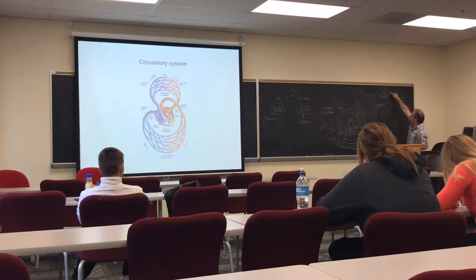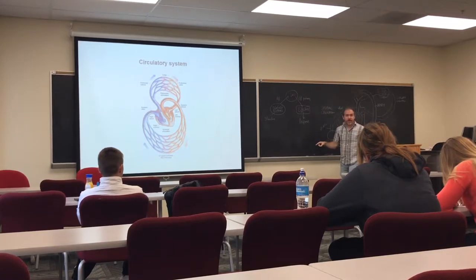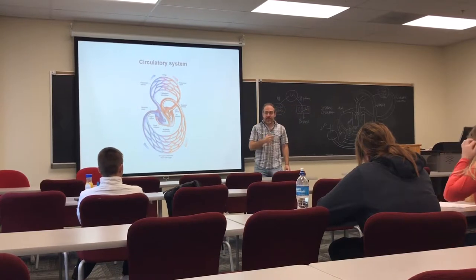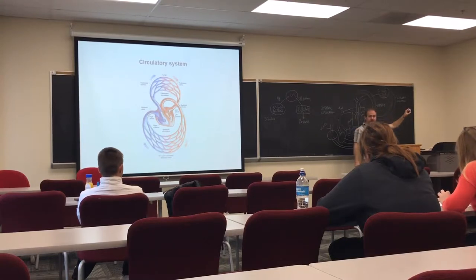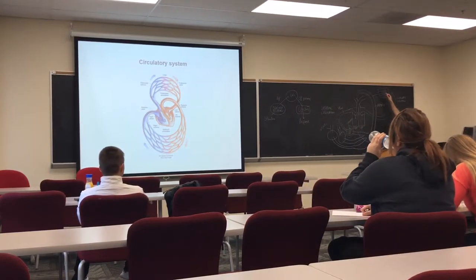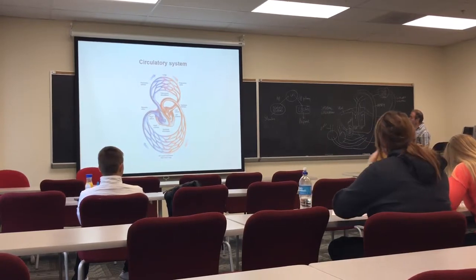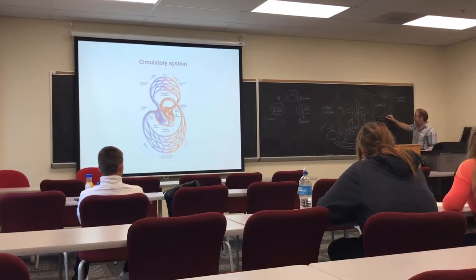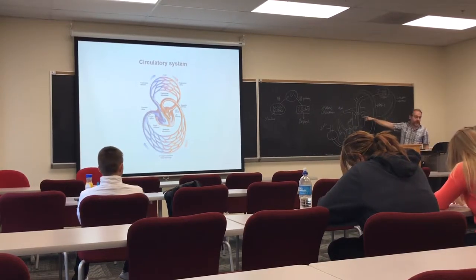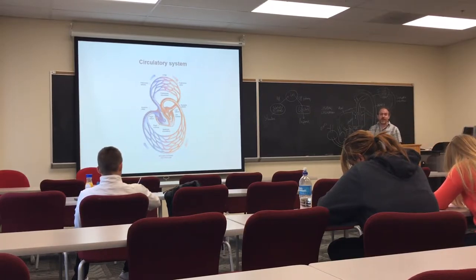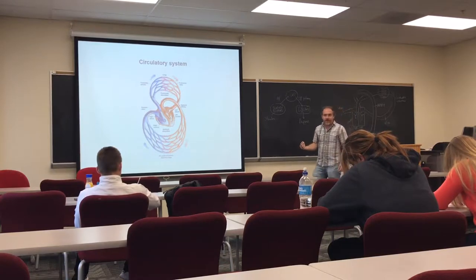This oxygenated blood comes back to the heart using a vein — we call it the pulmonary vein — which brings oxygenated blood to the left atrium. Not all veins carry deoxygenated blood. The pulmonary vein is a vein carrying oxygenated blood.